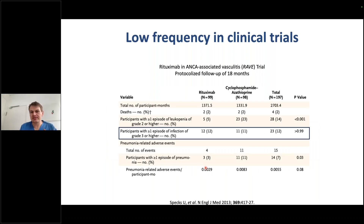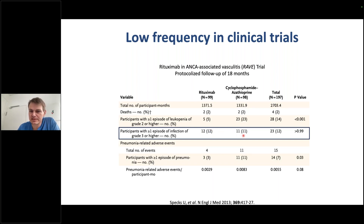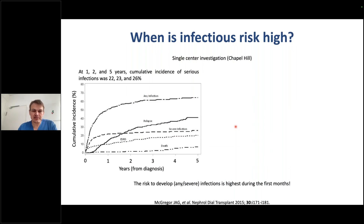When it comes to clinical trials, severe infections are definitely underrepresented compared to real-life cohorts. Looking at the RAVE trial — the most important trial leading to rituximab approval — around 12% serious infections were reported within the first 18 months in the rituximab arm, compared to 11 events in the cyclophosphamide/azathioprine arm. Only roughly 10% developed serious infections, definitely lower than in real-life cohorts. A very elegant study from Chapel Hill clearly showed the cumulative incidence of serious infections is highest in the first six months.